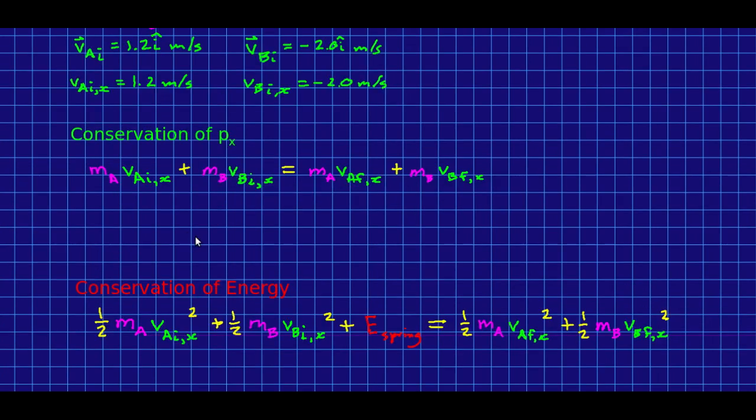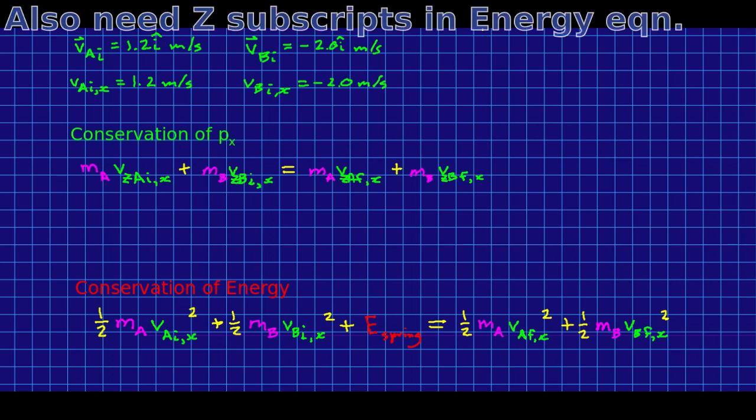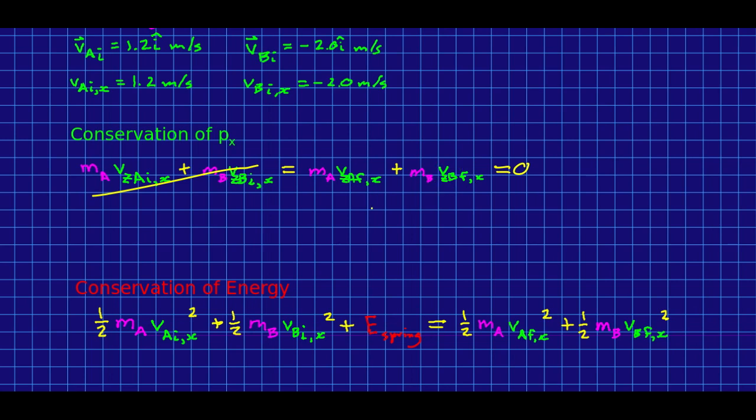Zero momentum reference frame to the rescue. If we knew how to transform into the zero momentum reference frame, in other words, if we knew what the velocity of the zero momentum reference frame was, we would transform into it. And so these would become vZ, because they're now relative to our zero momentum frame. And the thing is, we now know that this is just zero, which means we can totally ignore the initial.